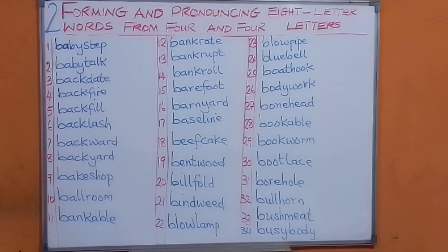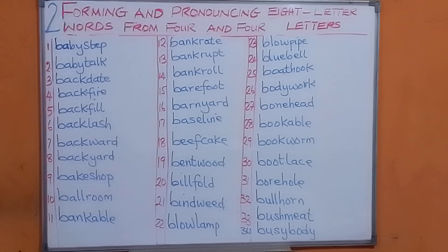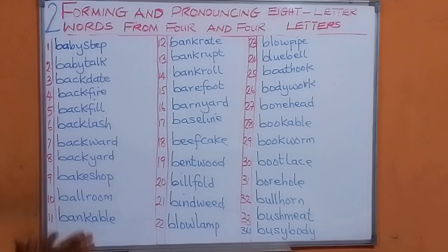We have been able to see there are so many words you can make by joining four and four letters. You can confidently and easily make eight letter words. Since we said form it, we will be able to form eight letter words by joining four and four letters. The same four letter words you join, you are going to now put them together and read.